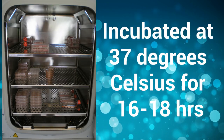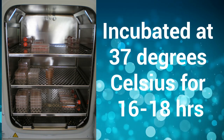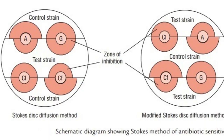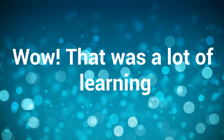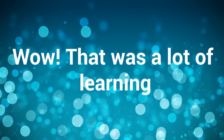The plates are then incubated at 37°C for 16 to 18 hours. Reporting in Stokes disc diffusion method: we compare the zones of inhibition of the control and the test bacterium. The radius of the inhibition zone from the edge of the disc is measured. Result is interpreted as Sensitive (S) if the zone radius is not more than 3 mm smaller than the control; Intermediate (I) if the zone radius is more than 2 mm but smaller than the control by greater than 3 mm; and Resistant (R) if the zone of inhibition radius measures 2 mm or less.